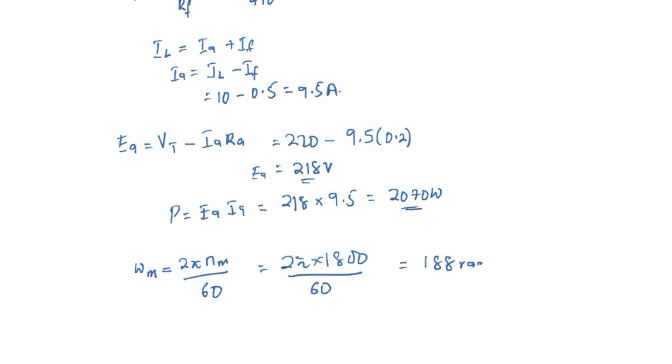And this is 188 rad per second. So now the torque, which is P over omega, is going to be 2070 Watt divided by 188 rad per second, and we are going to have 11 Nm as our torque.